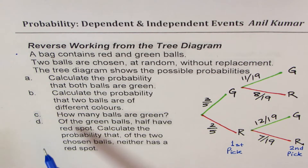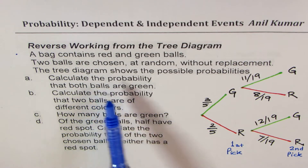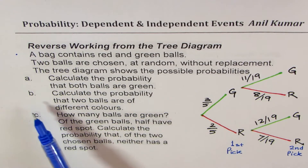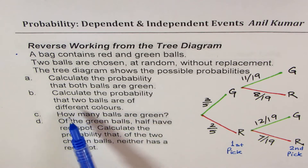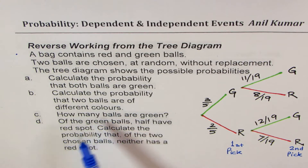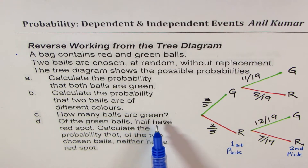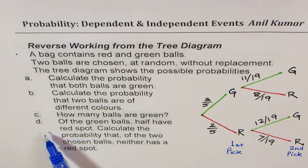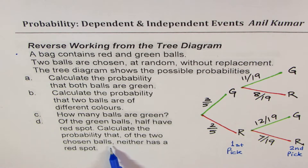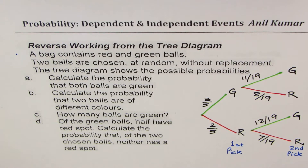Based on this we have four questions. The first one: calculate the probability that both balls are green. Second: calculate the probability that two balls are of different colors — so one is green, one is red. C: how many balls are green? And D: of the green balls, half have red spots — calculate the probability that of the two chosen balls, neither has a red spot. That is a brilliant question, and I think it is only because of part D that this question came to me.